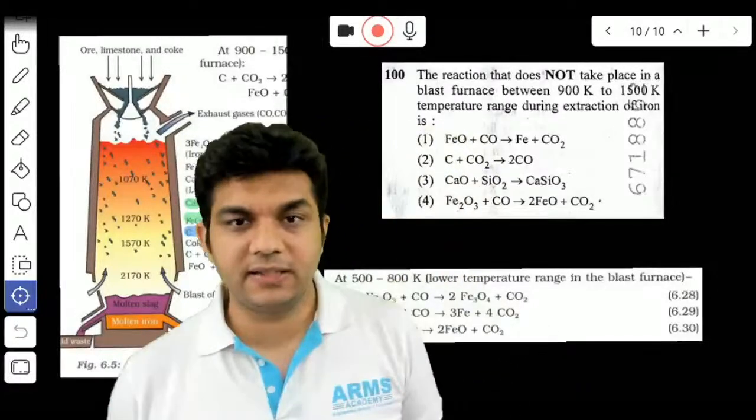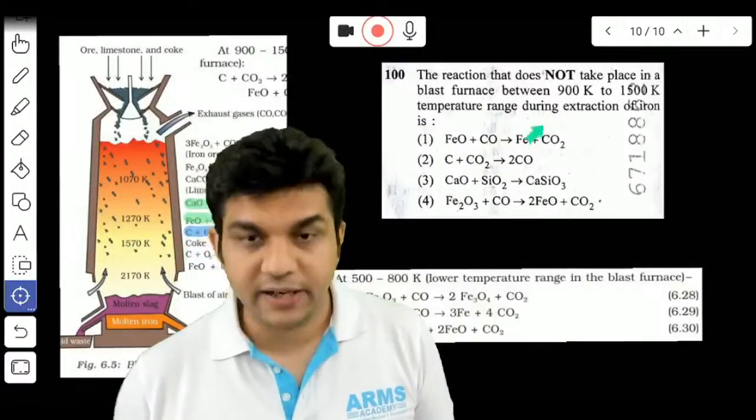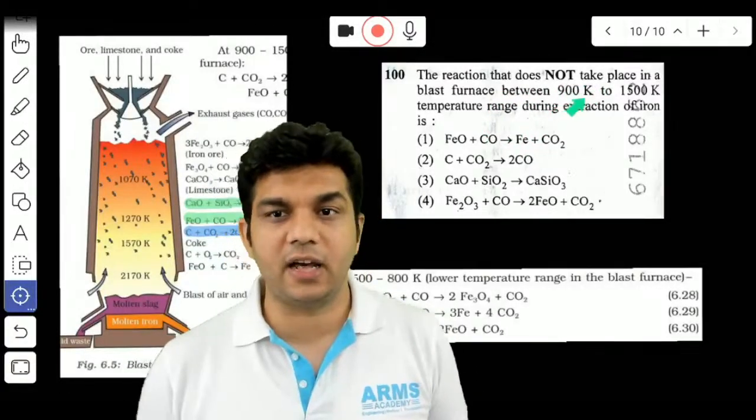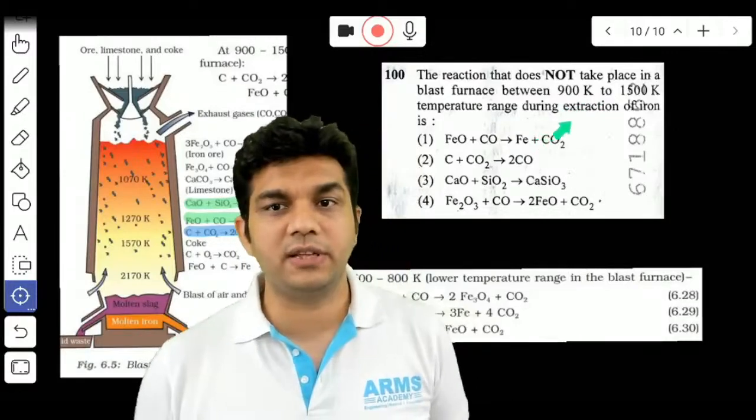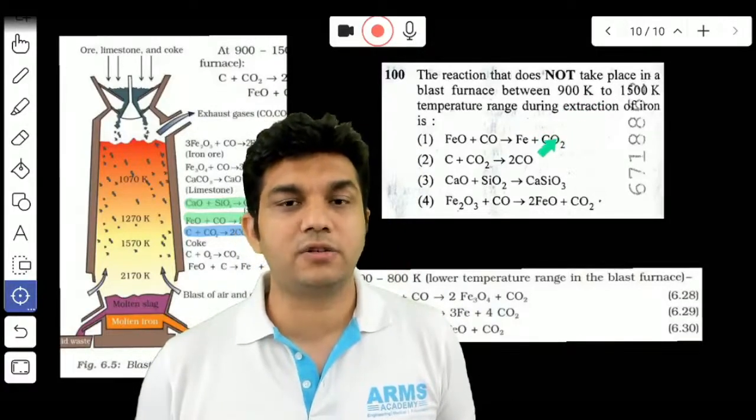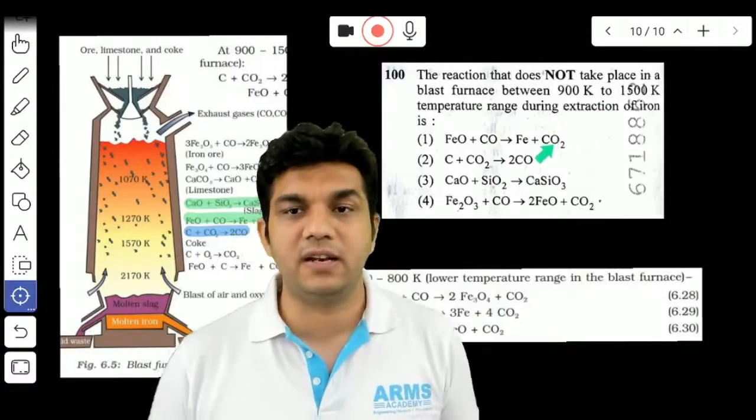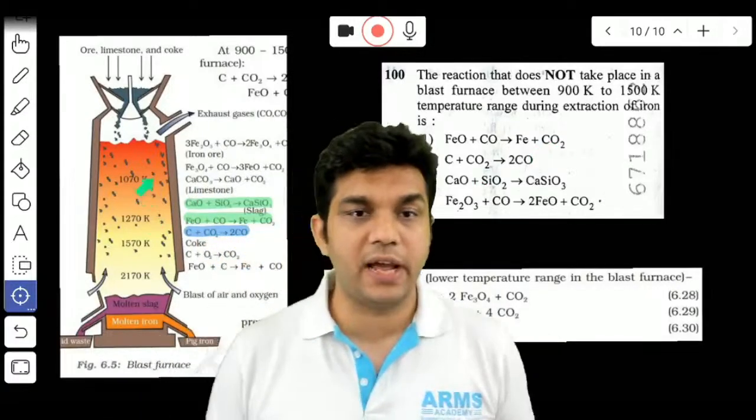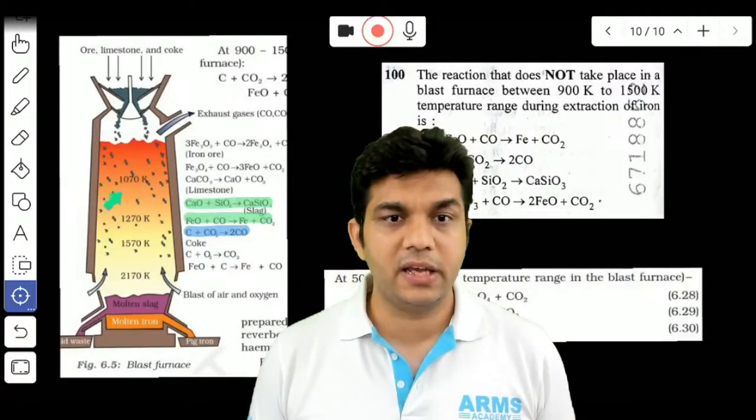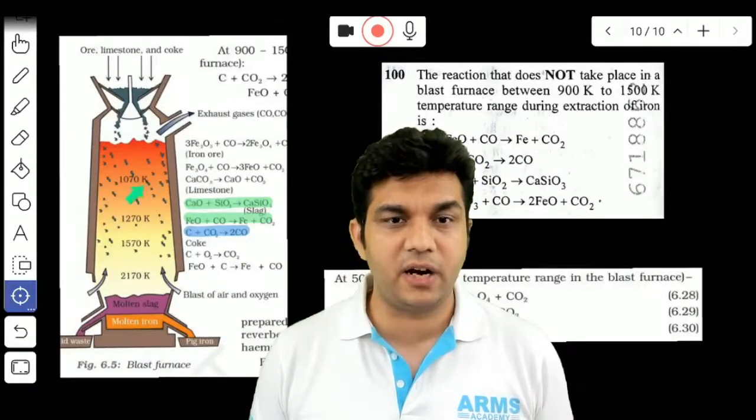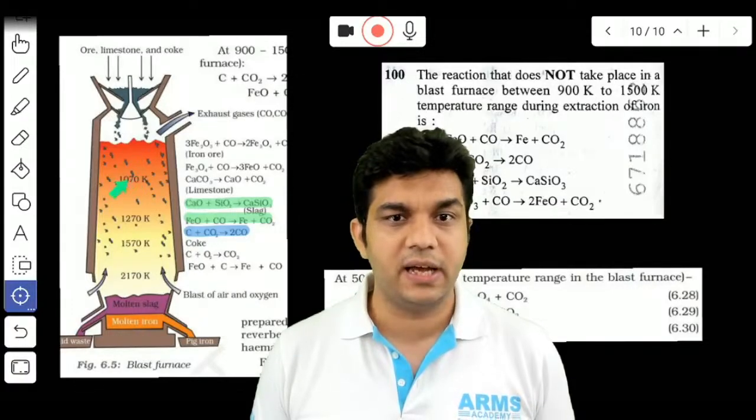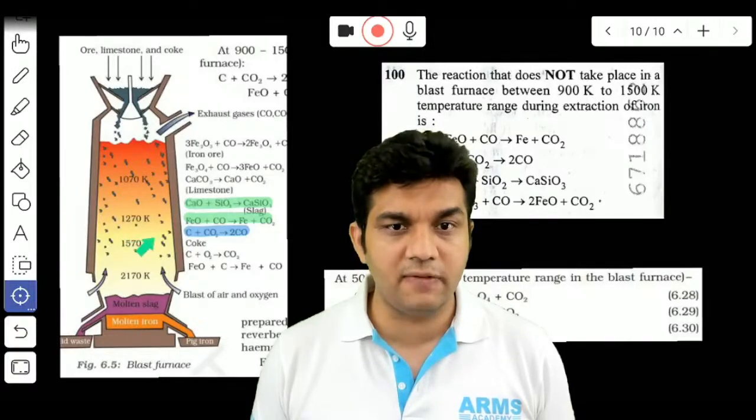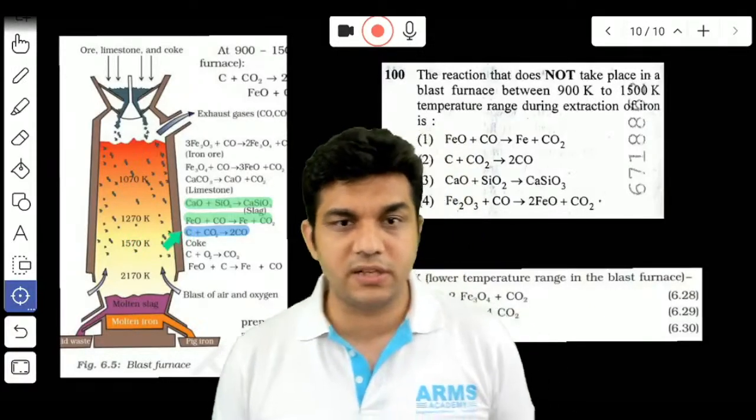The reaction that does not take place in the blast furnace between 900 Kelvin to 1500 Kelvin temperature range during the extraction of iron is: the reaction at 900 Kelvin to 1500 Kelvin, which reaction will not occur?